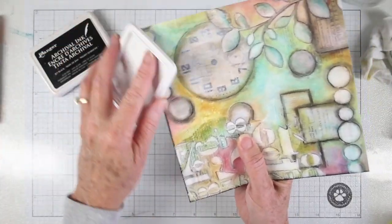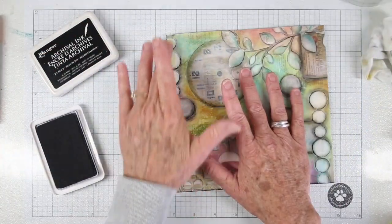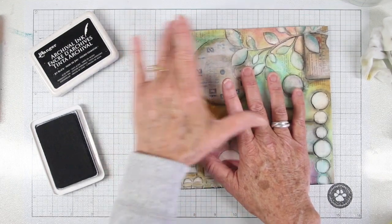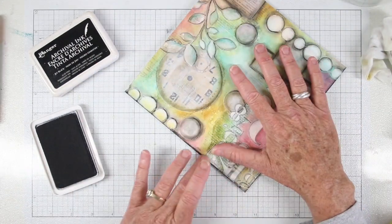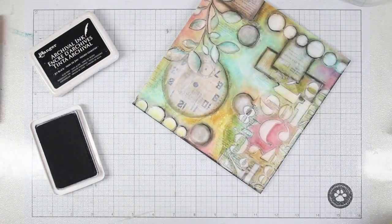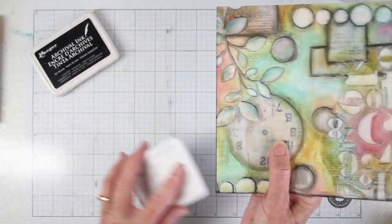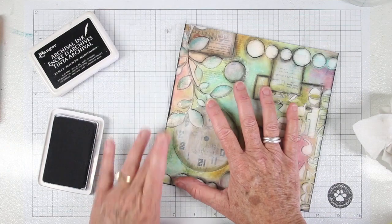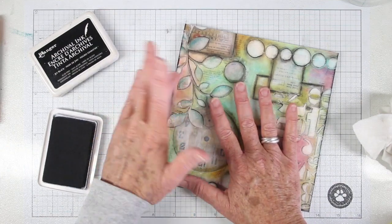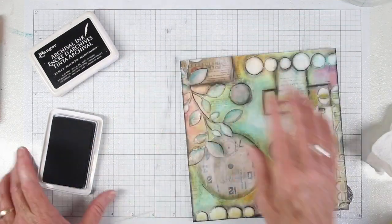To finish this off, I am using my archival ink and I am smudging onto the edge so that it has that same feel as I used with the marker around the ephemera. This will also go really nicely once I put it into my black journal. I'm just rubbing that ink pad onto the edges and then using my finger to blend that out.